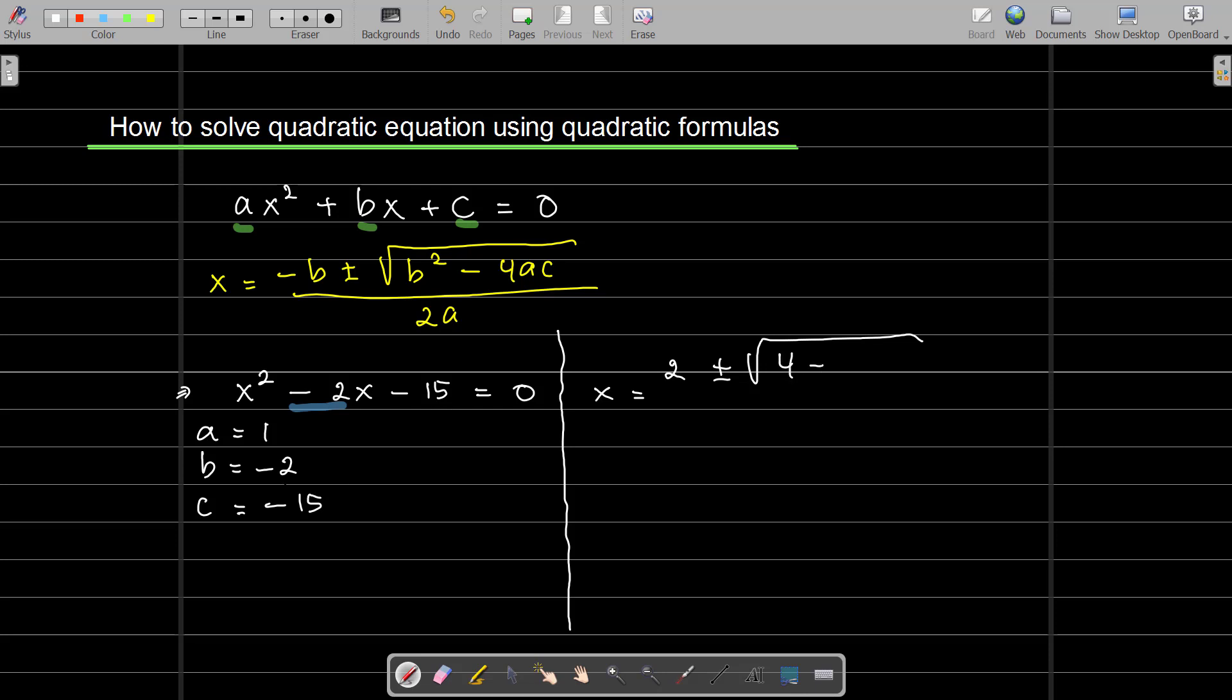-2 squared is 4, minus 4ac. So 4 times 1 times -15. If you're confused, I can write 4 times 1 times -15, divided by 2a, 2 times 1, because a is 1, 2 times 1 is 2.